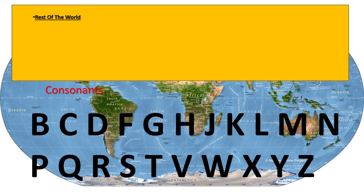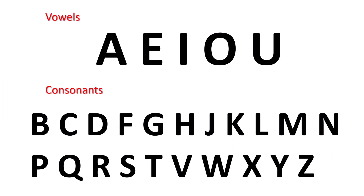And now the consonants have the rest of the world, which means B, C, D, F, G, H, J, K, L, M, N, P, Q, R, S, T, V, W, X, Y, and Z.